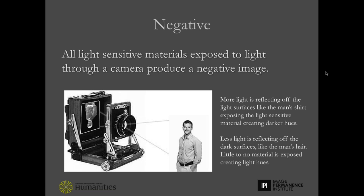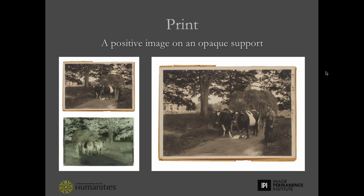Let's discuss how the camera works. Light reflecting off the subject enters the camera through the lens. Values of light, seen as an image, are projected onto the light-sensitive photographic material in the camera, but the image is upside down and backwards. The exposed photographic material produces a tonally reversed image — the light areas of the scene appear dark, and the dark areas appear light. For example, the man in this picture has a light-colored shirt; white is reflective, so the light bounces off and exposes the photographic material, making those areas dark. His dark hair, however, absorbs light and appears white in the camera because there's really no exposure happening there.